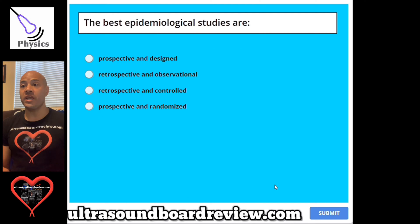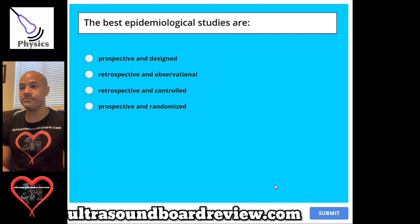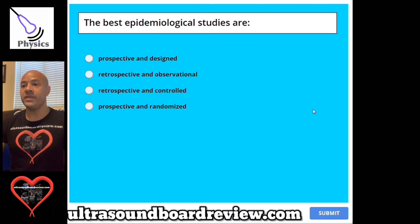Question 91. The best epidemiological studies are: A, prospective and designed. B, retrospective and observational. C, retrospective and controlled. Or D, prospective and randomized. The answer is D, prospective and randomized.